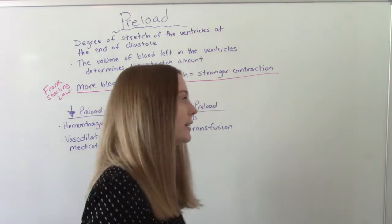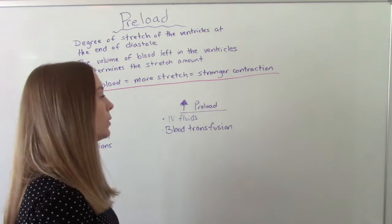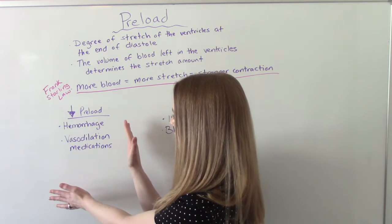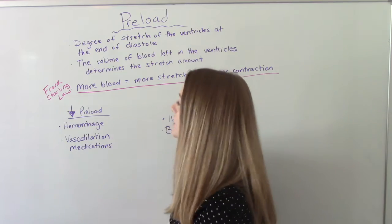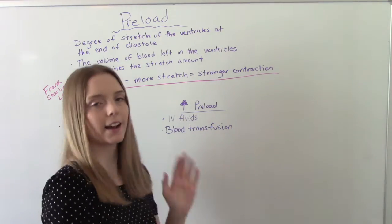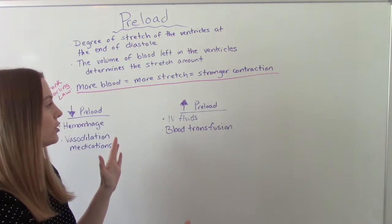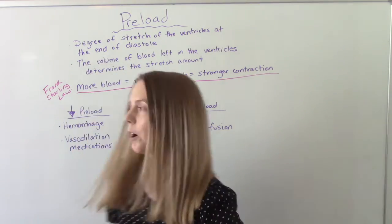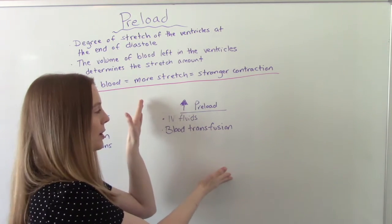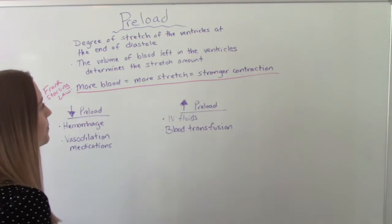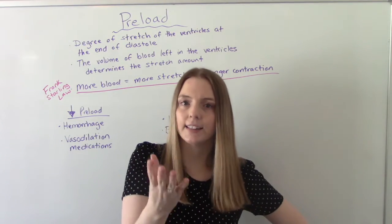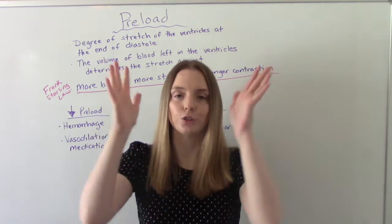Now let's talk about increased preload. Things we can do to increase it include giving fluids — IV fluids or blood transfusion. Just as decreased preload is related to blood loss or fluid volume loss, increased preload is related to having more fluid, more blood. This is important because think about our patients who are losing too much — they're hemorrhaging and have decreased preload. We want to fix that by giving them IV fluids and a blood transfusion to bring it back up.